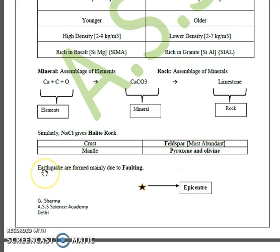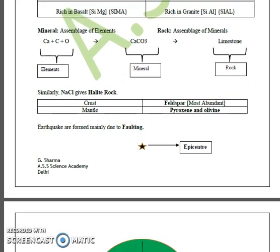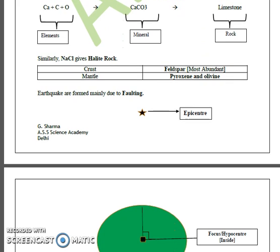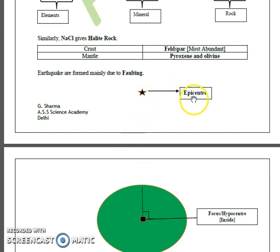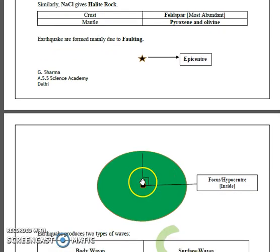Earthquakes occur mainly due to the faulting of layers or plates. As shown in the diagram, at the center of the earthquake we have a focus or hypocenter, which originates inside the Earth. Exactly above this focus is the epicenter, which has a 90-degree angle to the focus from the center of Earth.